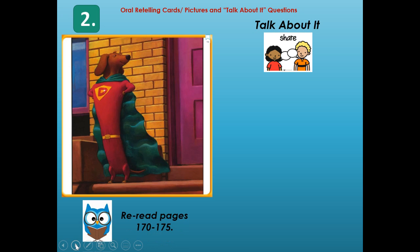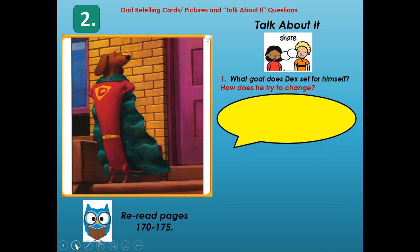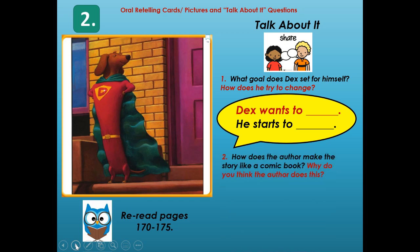Here's our next major event — reread about it on pages 170 to 175. What goal does Dex set for himself, and how does he try to change? Well, Dex wants to be a superhero, so he starts to train and exercise and work out. He studies what superheroes are supposed to act like — he studies all different types of superheroes.